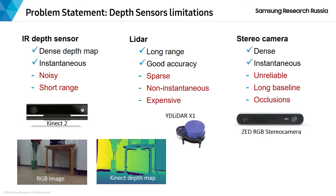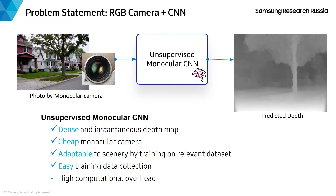Our solution is to use a Monocular Depth Convolutional Neural Network trained in an unsupervised way to predict dense depth maps given a single image. Such a solution has the advantages of producing dense and instantaneous depth maps using a cheap monocular camera, and is also adaptable to various scenery by training on a relevant dataset, while training data collection is relatively easy. However, the typical downside of the approach is high computational overhead of inferencing using a large CNN.